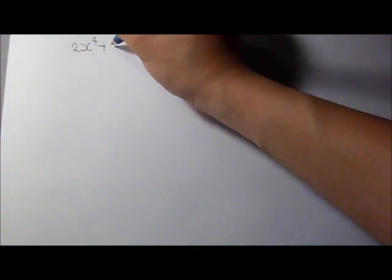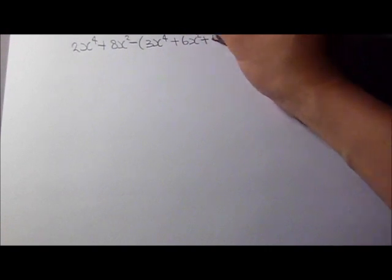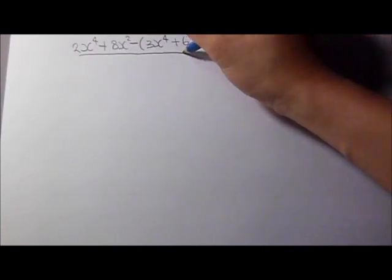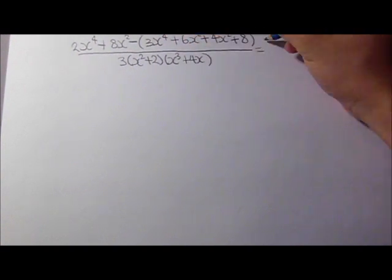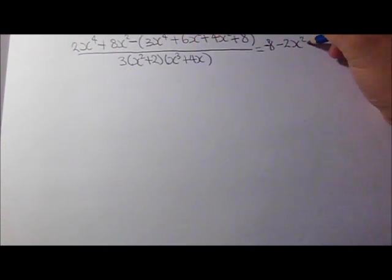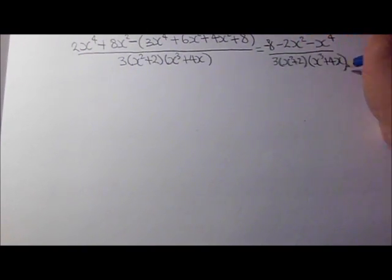So for the next step, we continue to simplify the right hand side before we multiply by y. So we get 2x to the 4 plus 8x squared minus 3x to the 4 plus 6x squared plus 4x squared plus 8 over 3 times x squared plus 2 times x cubed plus 4x.